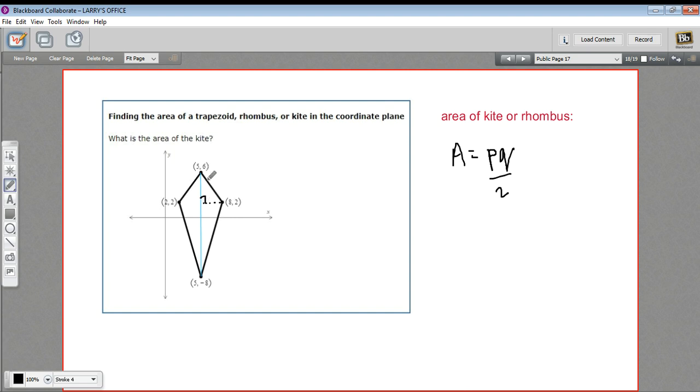This blue line is going to be the difference in the y-coordinates. Six to negative eight, that's going to be a distance of 14. And this is going to be half of this distance here, this altitude. So this goes from eight to two, so that's six. So this is three.